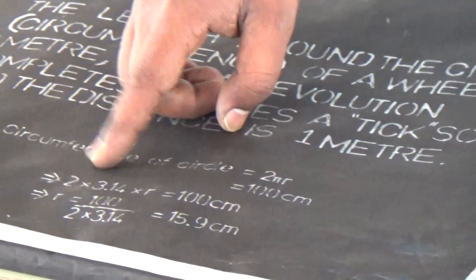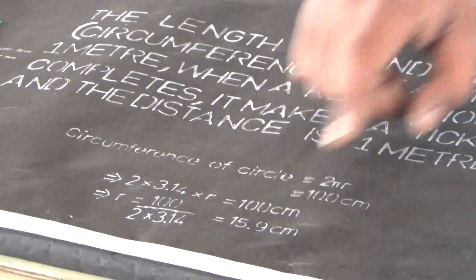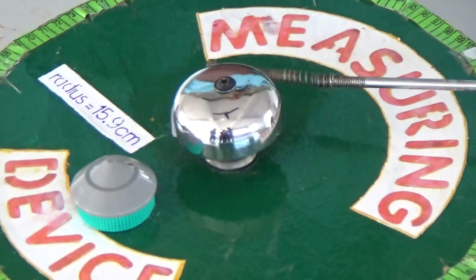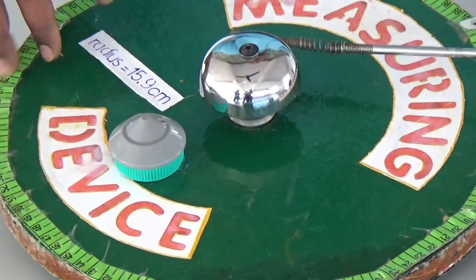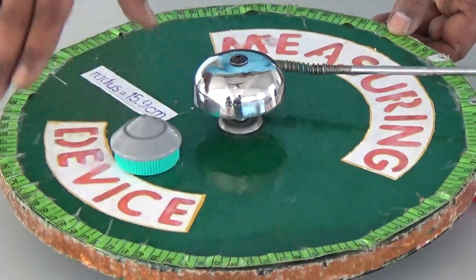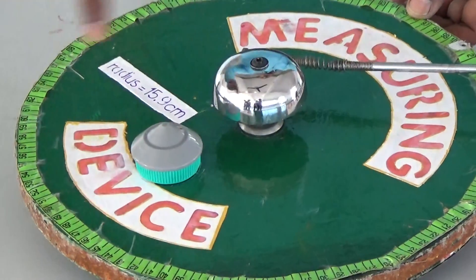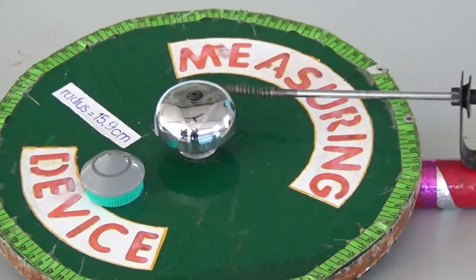So that should be 100 centimeters, which means exactly 1 meter. Now if you apply the formula, you get the radius as 15.9 centimeters. So what we did — we took a cardboard with a 15.9 centimeter radius. Now this complete circle is 1 meter. For every one circuit, it rotates exactly 1 meter.